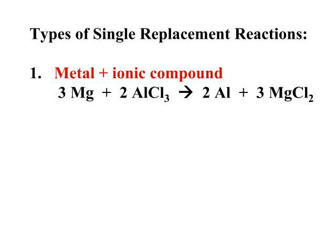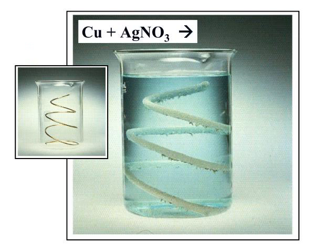So let's look at a quick review of the types of single replacement reactions. One of the more common is taking a metal and placing it with an ionic compound. If the metal is more reactive, then it will push that metal out, creating aluminum metal and forming magnesium chloride. Metals and ionic compounds, very common type of single replacement reaction.